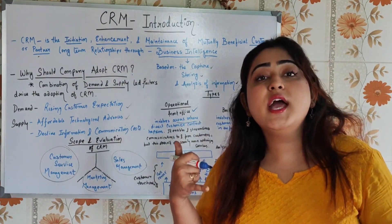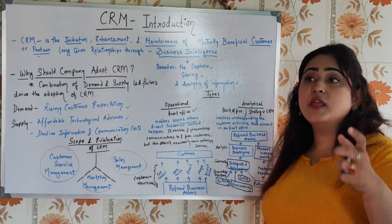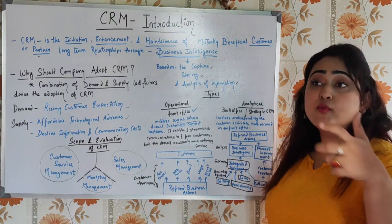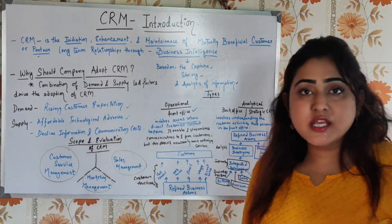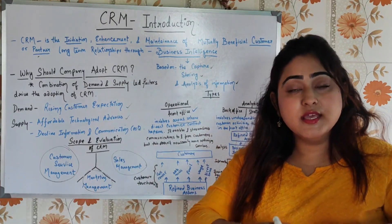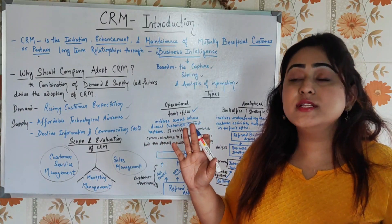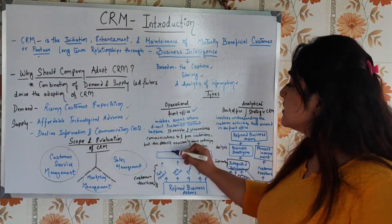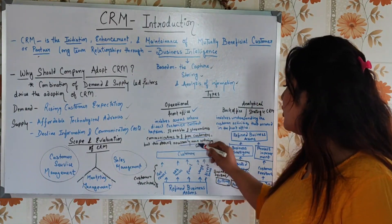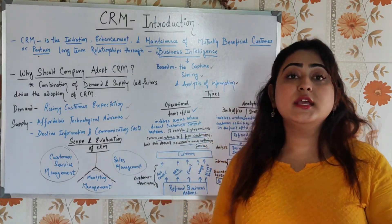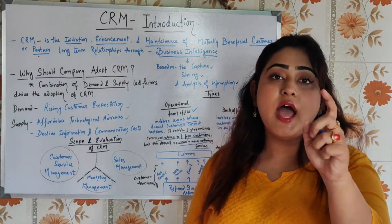Examples of operational CRM include call centers, web access — where you can see how customers use your products — emails, usage data, and direct sales. These are all customer touch points where the business and customer have direct contact. Operational CRM enables and streamlines communication to and from customers, but it does not necessarily mean optimizing services — it is simply about the direct contact between customer and business.